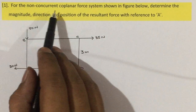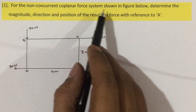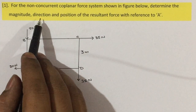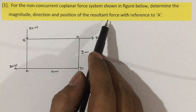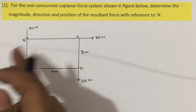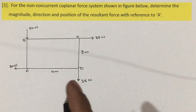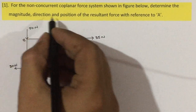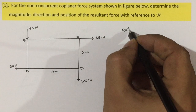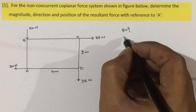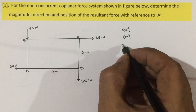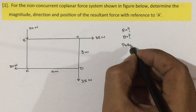Problem 1. For the non-concurrent coplanar force system shown in the figure below, determine the magnitude, direction, and position of the resultant force with reference to point A. We need to determine: magnitude of the resultant R, direction theta, and position.